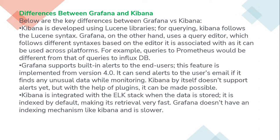Grafana supports built-in alerts to end users, a feature implemented from version 4.0. It can send alerts to the user's email if it finds any unusual data while monitoring. Kibana by itself does not support alerts yet, but with the help of plugins it can be made possible. Kibana is integrated with the ELK stack and when data is stored, it is indexed by default making its queries very fast. Grafana does not have an indexing mechanism like Kibana and is slower.